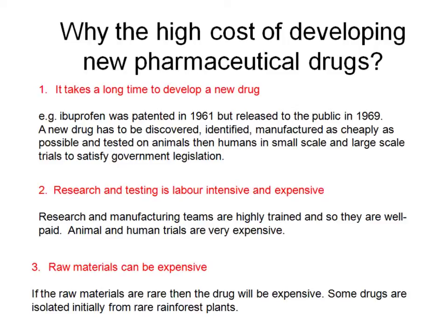First, it takes a long time to develop a new drug. For example, ibuprofen was patented in 1961 as Nurofen by Boots in Nottingham but only released eight years later, because it needed to be manufactured as cheaply as possible and tested — first on animals and then on humans in small and then large scale trials — and had to satisfy government legislation, which takes a long time and costs a lot of money. Secondly, research and testing is labour intensive and expensive because teams have to be very highly trained and well paid.